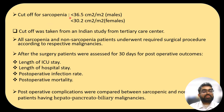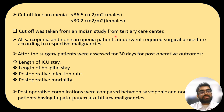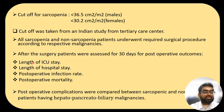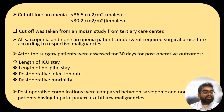The cutoff for sarcopenia is less than 36.5 cm²/m² in males and less than 30.2 cm²/m² in females. The cutoff was taken from an Indian study from a tertiary care center. All sarcopenic and non-sarcopenic patients underwent the required surgical procedure according to their respective malignancy. After surgery, patients were assessed for 30 days for post-operative outcomes like length of ICU stay, length of hospital stay, post-operative infection rate, and post-operative mortality.